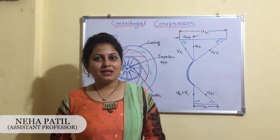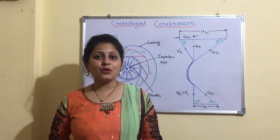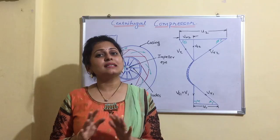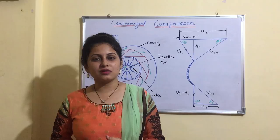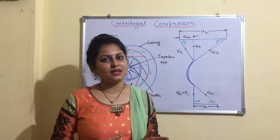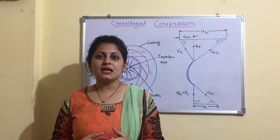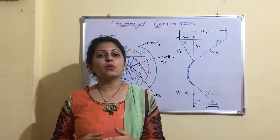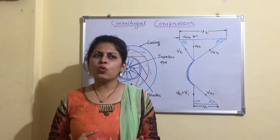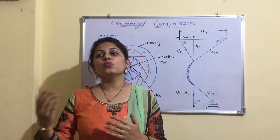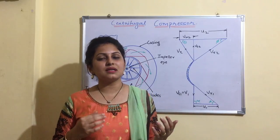Hello friends, welcome back. In the previous video we had seen reciprocating air compressors. In this video we are going to study centrifugal compressor, which is a type of rotary compressor. Rotary compressors consist of a rotor and casing arrangement in place of a piston and cylinder arrangement. They are compact, well balanced, and high in speed. They provide pulsation-free air and are used to handle large mass of air with low or medium pressure range. Before moving on to the explanation, let us see the difference between reciprocating and rotary air compressors.